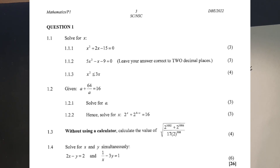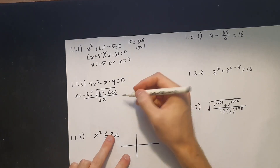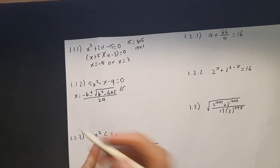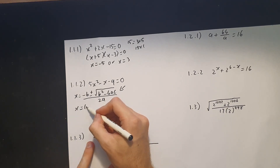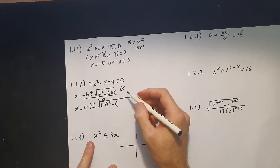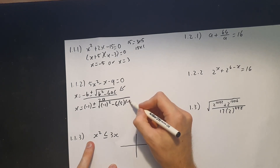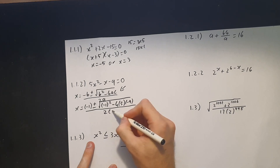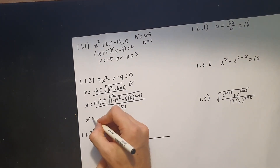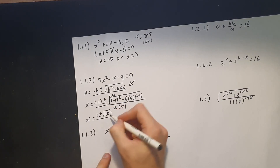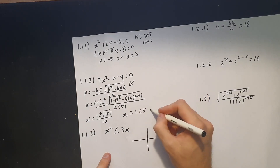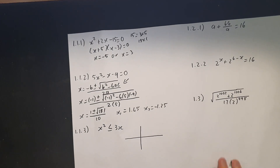The minute you see 'two decimal places' you should be thinking of the quadratic formula. Substituting the values: x = (−b ± √(b² − 4ac)) / 2a. Here b = −1, a = 5, c = −9. Plugging into the calculator gives x = (1 ± √181) / 10, so x₁ = 1.45 and x₂ = −1.25.